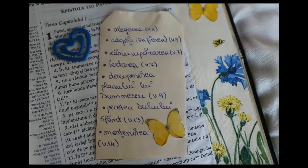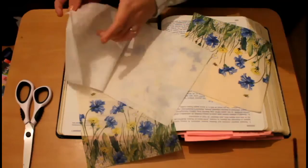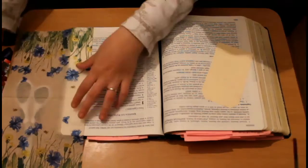Hello everybody, this is Ruth with an art journaling page in my Bible on Ephesians chapter 1. I'm going to use a napkin and I will only use the top layer - it has three layers and I will only take the top one and cut it to fit on my margin.